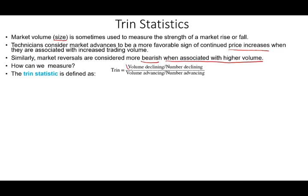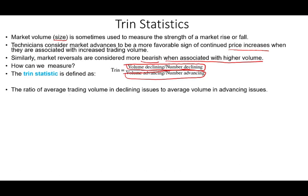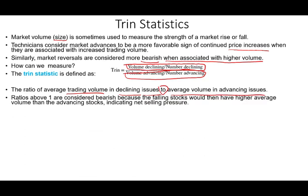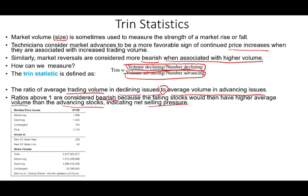You take those two ratios and divide them by each other: the average trading volume in declining issues divided by the average volume in advancing issues. A ratio above one is considered bearish because falling prices have higher average volume than advancing stocks, indicating net selling pressure. The numbers are somewhat subjective — it depends on how you interpret them. Let's look at an example.